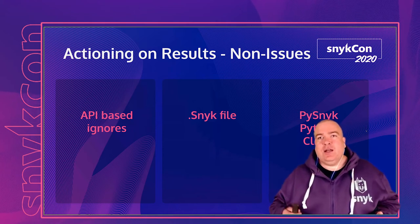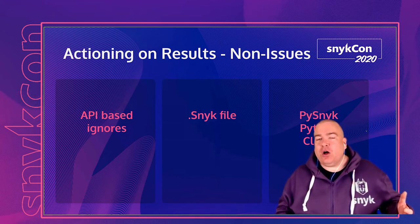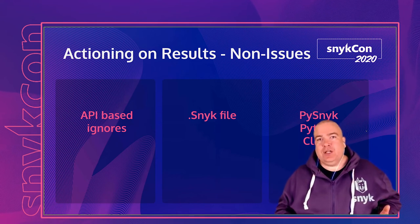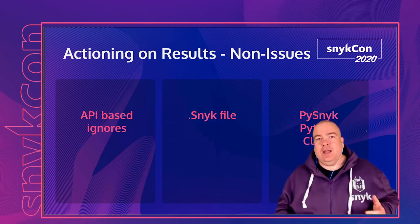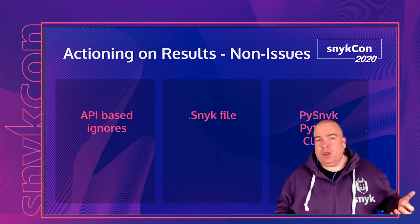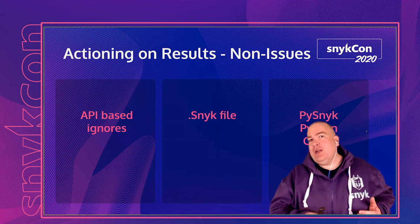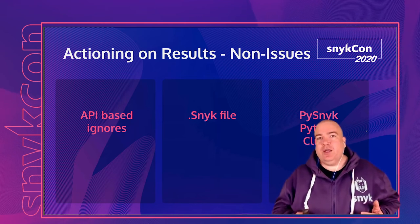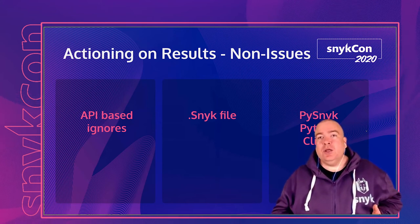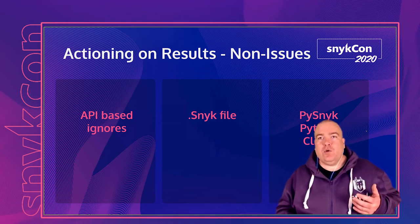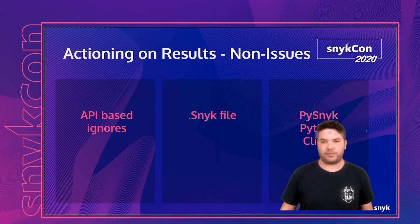The third category involves customers who prioritize issues based on whether the vulnerable function within a package is actually called. Snyk introduced reachable vulnerabilities to help prioritize issues where we see the vulnerable call being made. It's important to note that just because a vulnerable method isn't currently being used doesn't mean someone can't invoke it or a developer won't use it later, so be mindful when enabling ignores for those packages. We have capabilities to ignore temporarily or longer term.